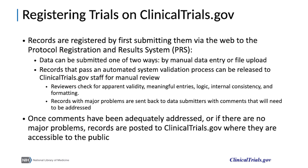Prior to publication on the clinicaltrials.gov website, trial information is first submitted via the Protocol Registration and Results System, or PRS, by manual entry or by upload. Entered information is evaluated via an automated system validation process. Records that have no errors via this analysis, which scans for missing or inconsistent information, can be released to clinicaltrials.gov staff for review.